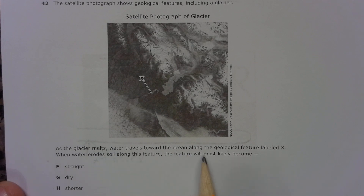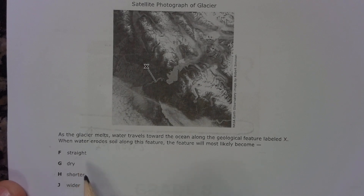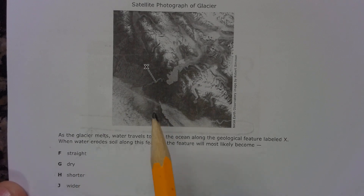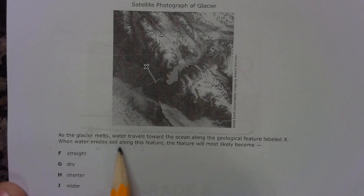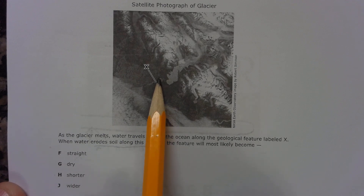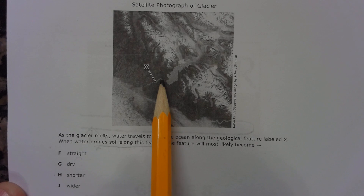When water erodes soil along this feature, the feature will most likely become: F, straight; G, dry; H, shorter; J, wider. So if you think about it, if the water erodes the soil along the feature — if it's eroding the soil along the side of the river — that would make the river get wider. Because it's eroding, the dirt along the riverbank is getting carried away, which makes it wider and wider every year. So your correct answer would be J.